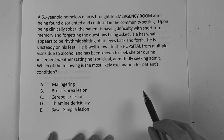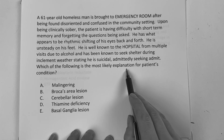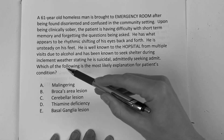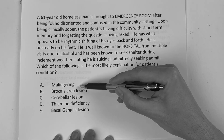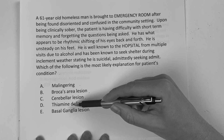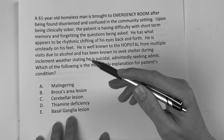All right guys, this is the daily question video, and this one should be neurology and biochem. So let's see how you do. It says: which of the following is the most likely explanation for the patient's condition? Answer choices are: malingering, Broca's area lesion, cerebellar lesion, thiamine deficiency, or basal ganglia lesion.